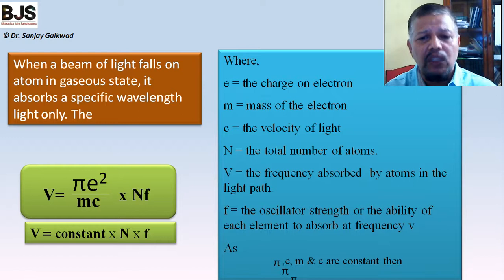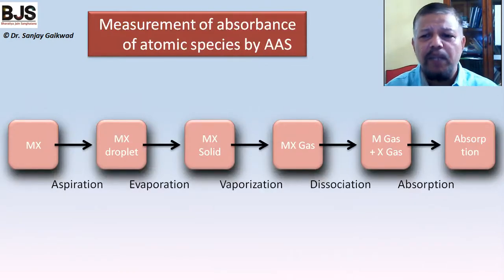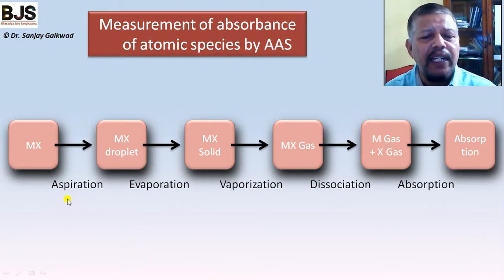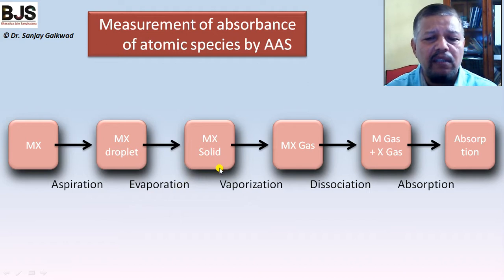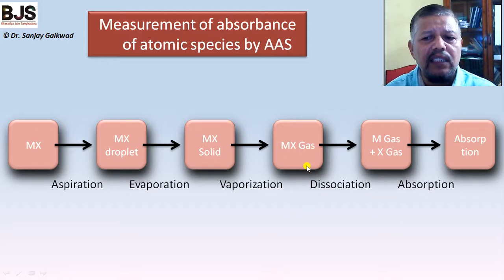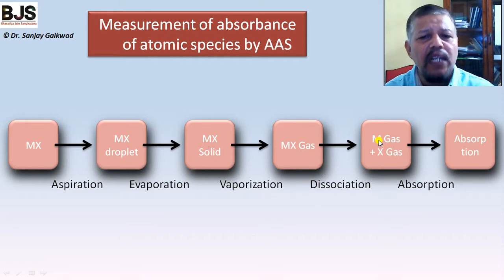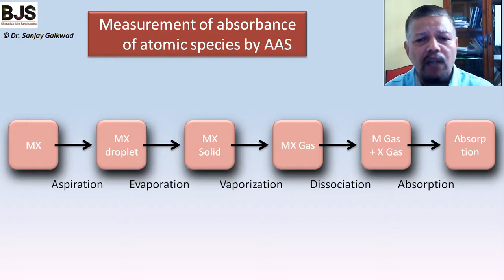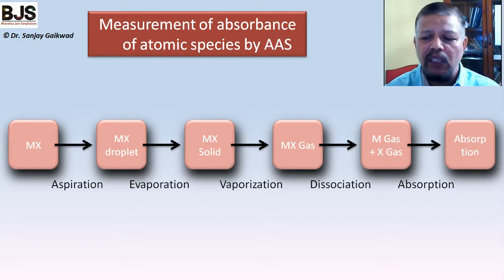The principle is that metal ions present in the solution are aspirated into the instrument, converted into small droplets by the nebulizer, then become solid form, then vaporized into gaseous state, and after dissociation the metal atoms in gaseous state absorb the radiation at the atomic level. The remaining radiation is measured, and from that we can calculate how many atoms are present in the solution.